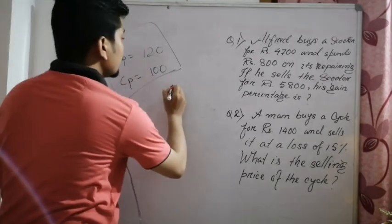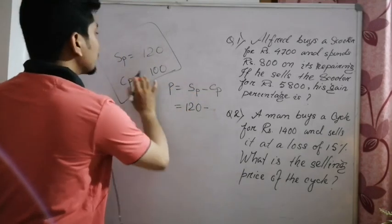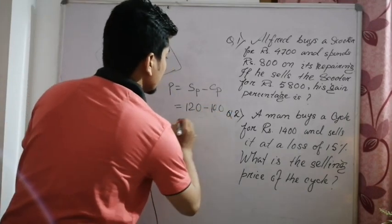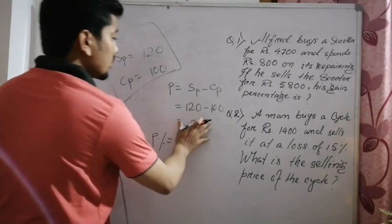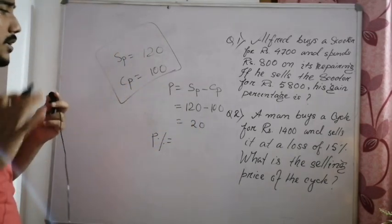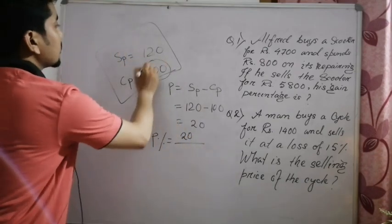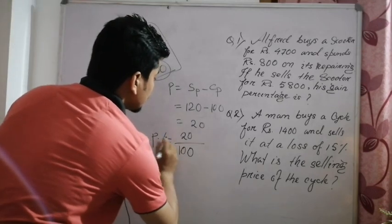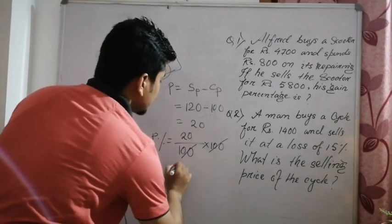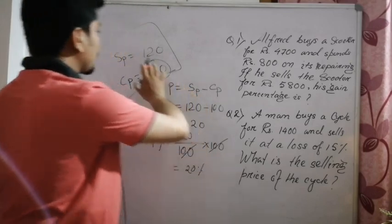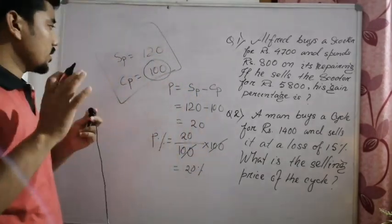Profit equals selling price minus cost price. Profit percentage equals profit divided by cost price, multiplied by 100. If you see the percentage symbol, that means — for example — 20% profit means 20% of the cost price.